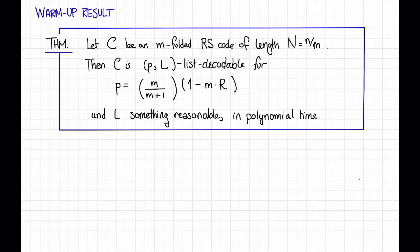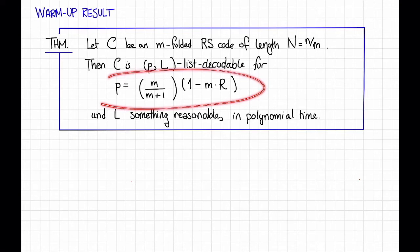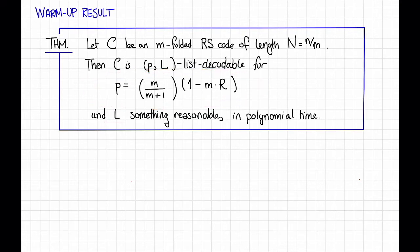Here's the result that we're going to prove. Suppose that C is an M-folded Reed-Solomon code of length capital N, which is equal to little n divided by M, so M is the folding parameter and little n is the length of the original Reed-Solomon code. Then the theorem says the folded Reed-Solomon code C is (P, L) list decodable for P equal to M divided by M plus 1 times 1 minus M times R, where the list size is something reasonable and the algorithm can run in polynomial time.